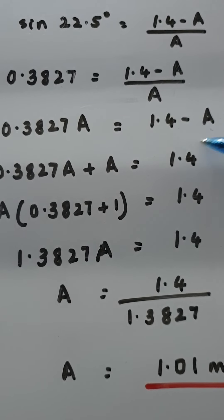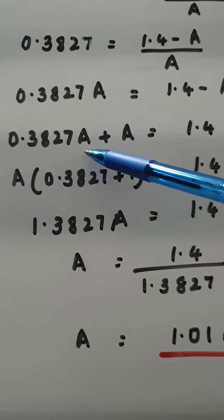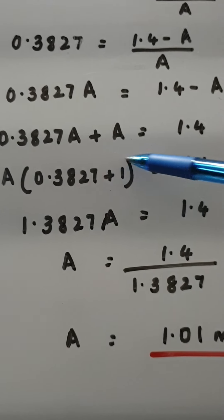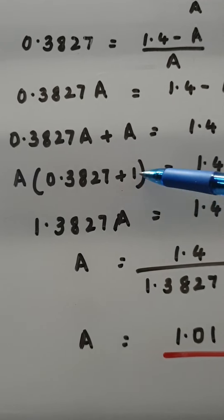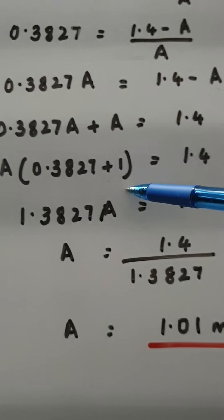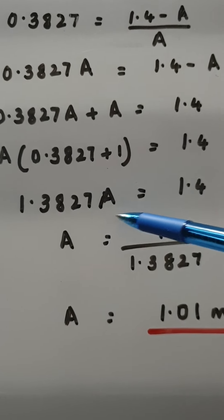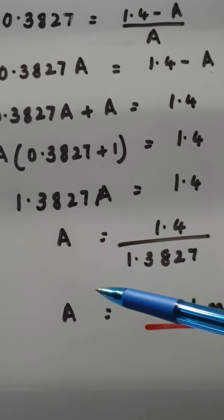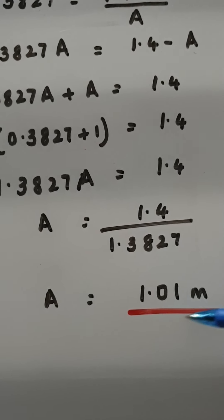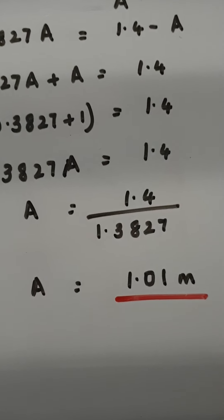I'm just going to get the A across to that side because it's minus it becomes 0.3827A plus A equals 1.4. Factorize, A is a common factor so this becomes 1 and then you add those two it becomes 1.3827A equals 1.4 or A equals 1.4 over that and then you get this answer 1.01 meters.